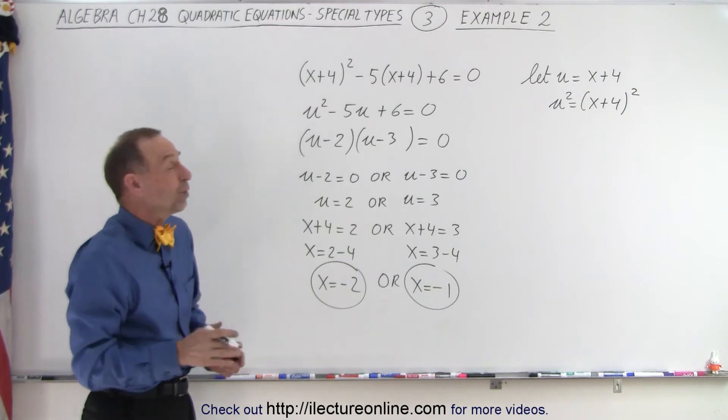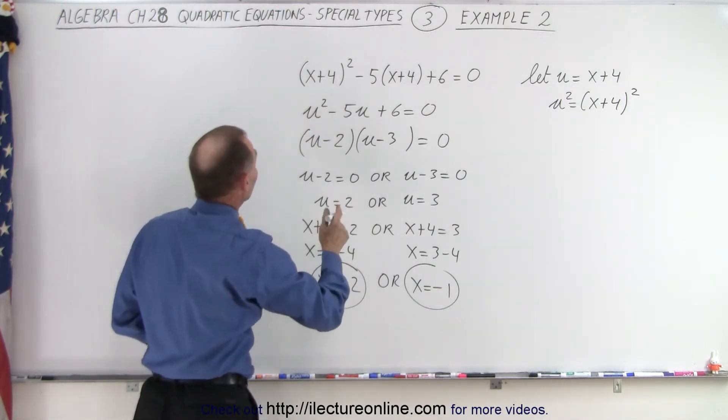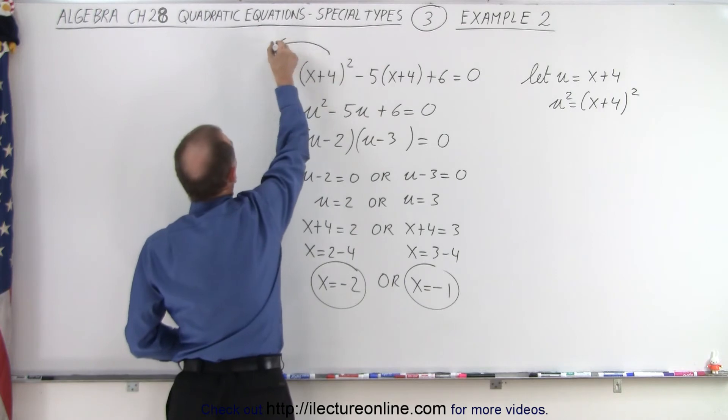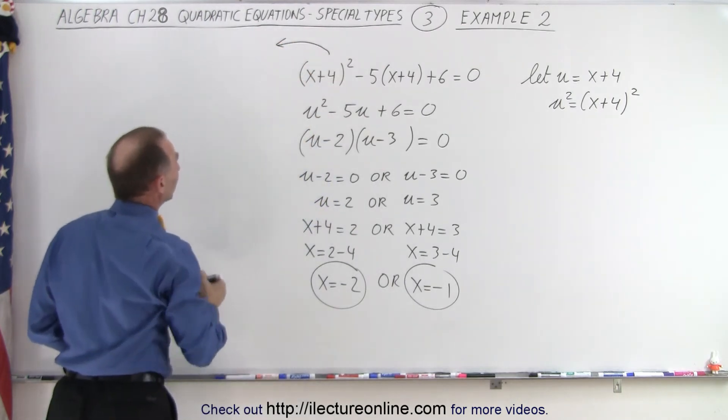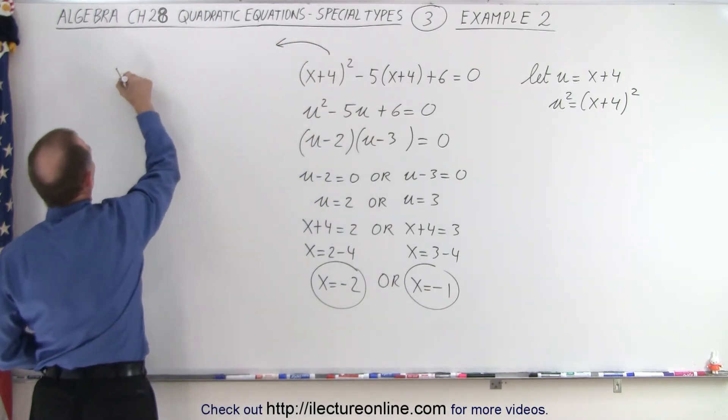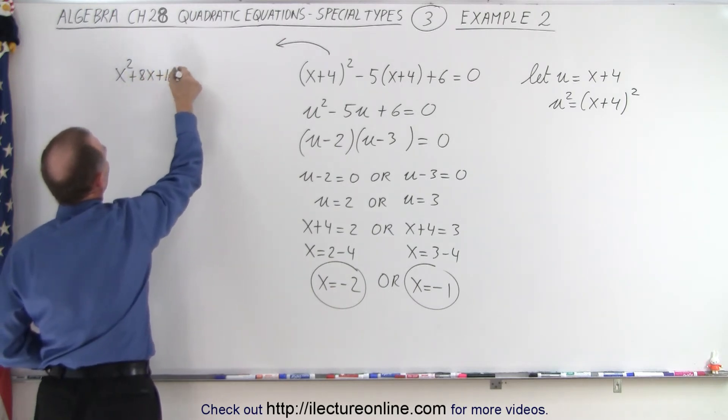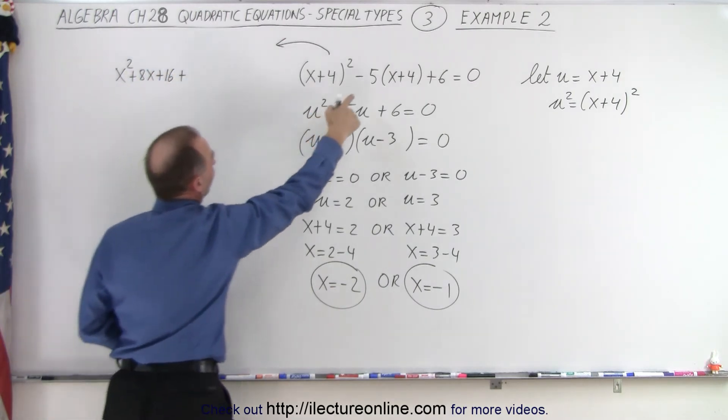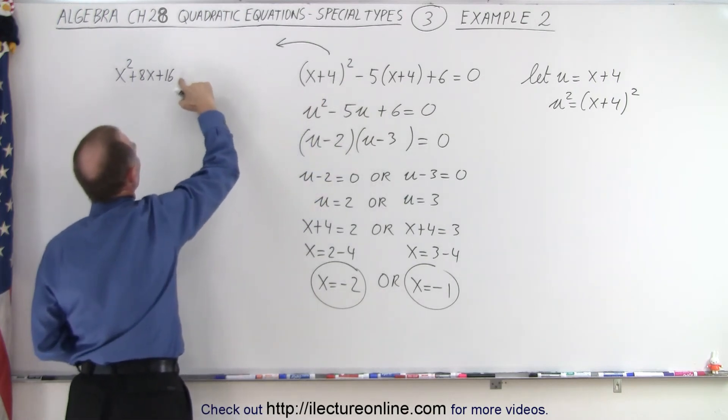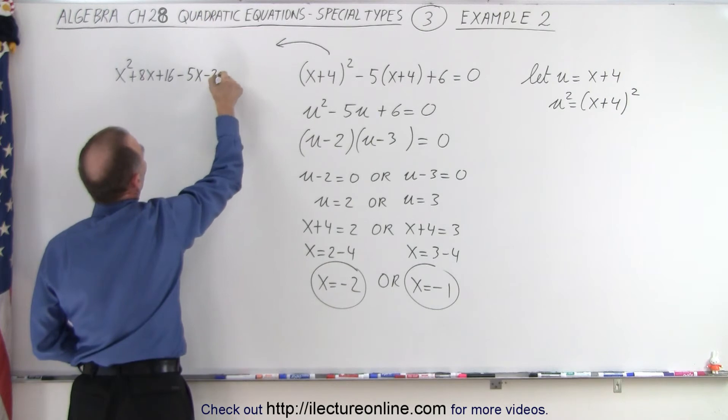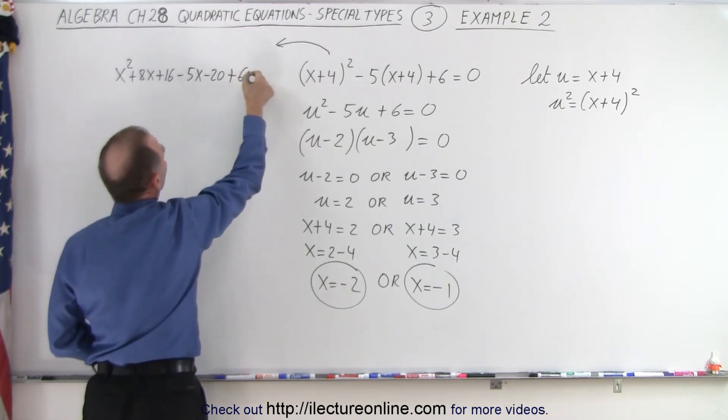Now, of course, we could have multiplied this out. And if we do, let's see what happens. So let's go ahead and multiply out those equations. So x plus 4 squared will give us x squared plus 8x plus 16, not plus because it's minus here, so let's get rid of that plus. Make it minus 5x minus 20 plus 6 equals 0.